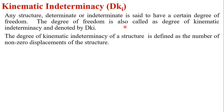The degree of freedom is also called the degree of kinematic indeterminacy and it is denoted by dk with suffix i. The degree of kinematic indeterminacy is nothing but the number of non-zero displacements of the structure, and this must be calculated before analyzing the structures.